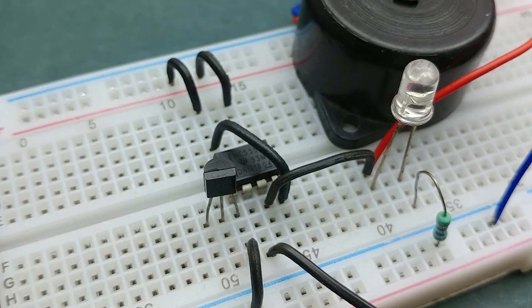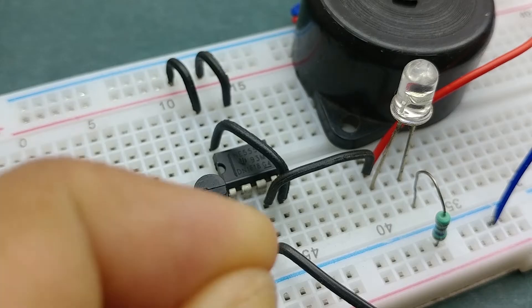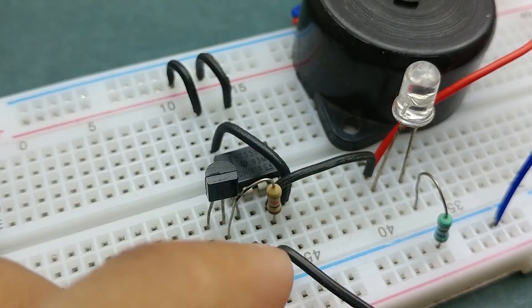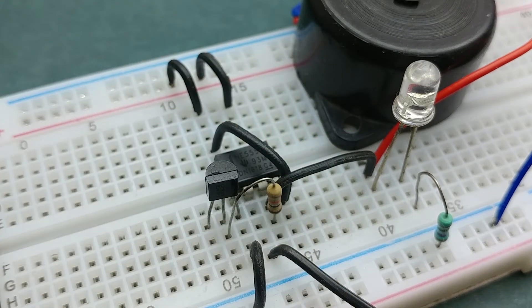For doing that, we'll use an NPN transistor. I've used a BC547 transistor and placed it such that its emitter pin is directly connected to negative rail. Now connect the base of this transistor which is the center pin to pin 3 of the 555 timer IC via a 10k resistor.